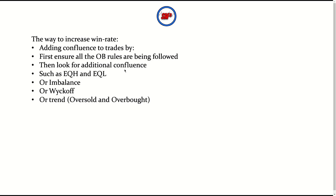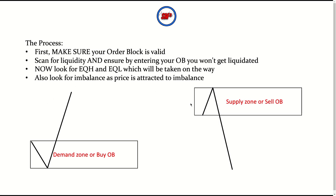Once you've confirmed all the order block rules are being followed, you can look for additional confluence. This can come in the forms of equal highs and equal lows, imbalance, Wyckoff — which I've made two previous videos on — and the trend, including oversold and overbought conditions covered in the master market structure video. I definitely recommend checking those out after watching this one.